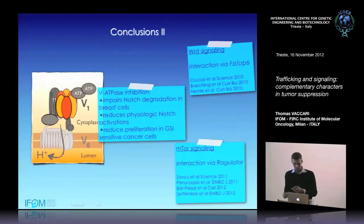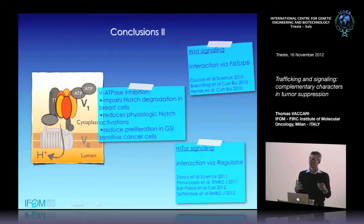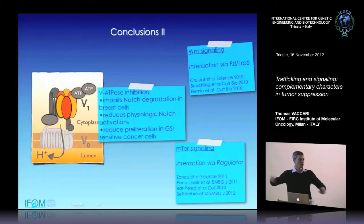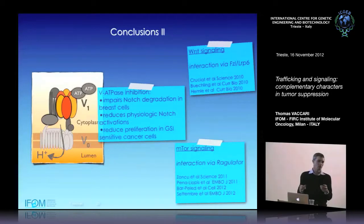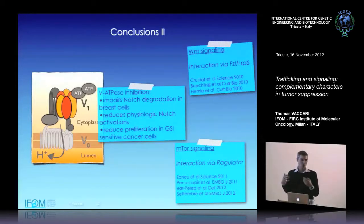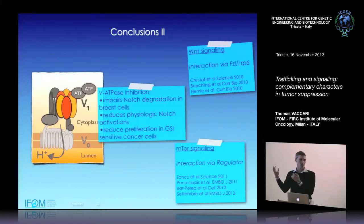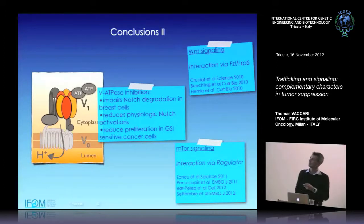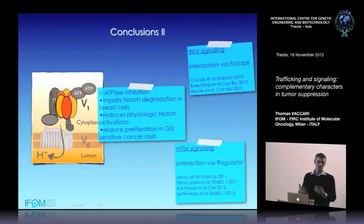This suggested to us that the V-ATPase could be used by signaling in multiple ways — either just part of the engine whose removal causes signaling problems, or actively regulated to support signaling in different contexts. So we went back to Drosophila. In the last part of the talk I will concentrate on unpublished data: we asked whether the activity or expression of this complex is regulated during development, when cell fate and signaling decisions are happening, and specifically whether the activity or expression of the pump might be regulated to support Notch or Wingless signaling events.